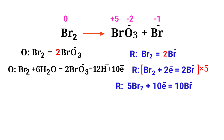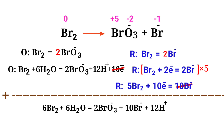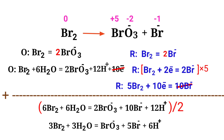Now you can add both reactions together. Now you can cancel the same terms. Now you can divide this equation by a coefficient of 2. The equation is now balanced in an acidic medium.